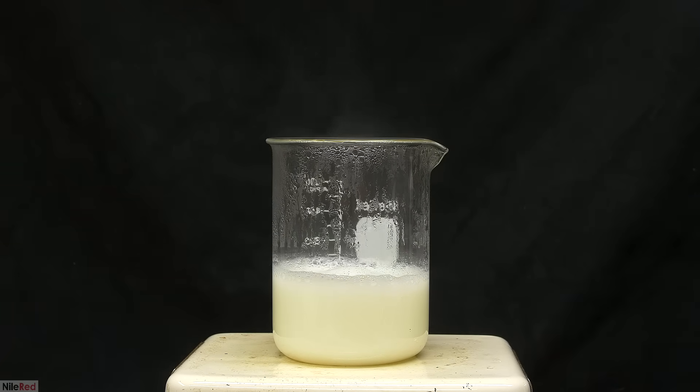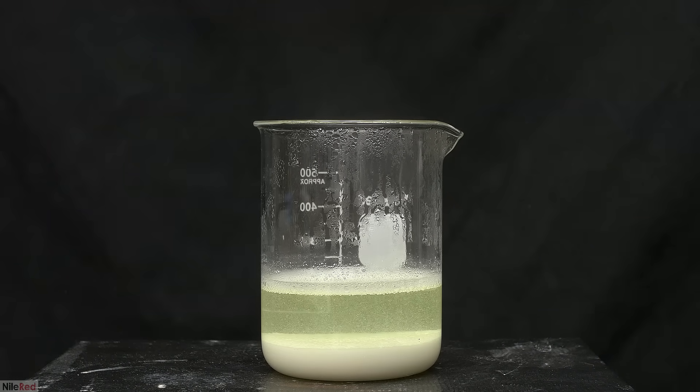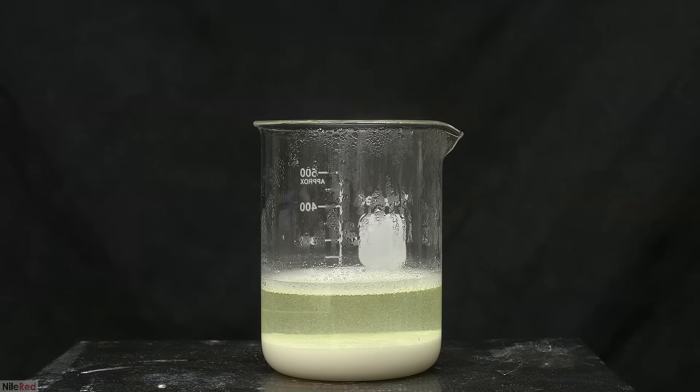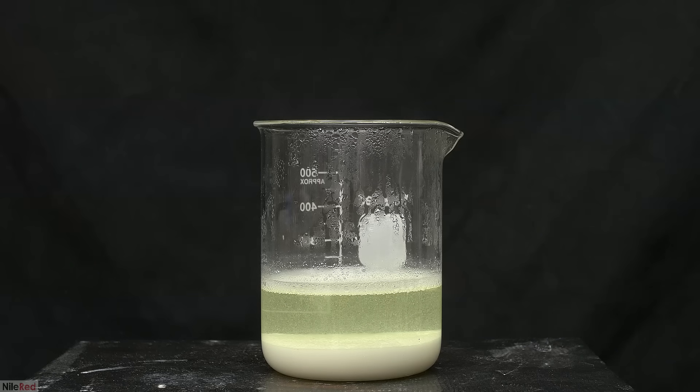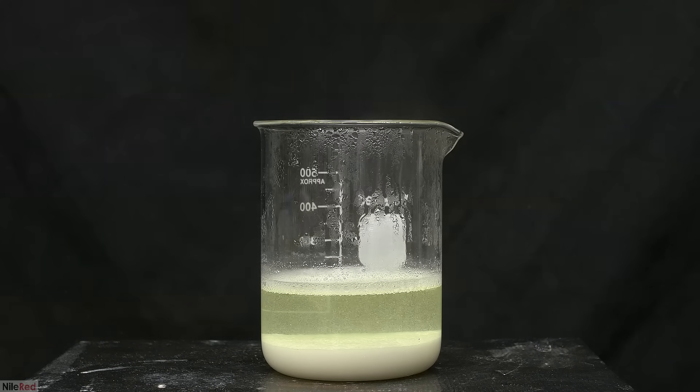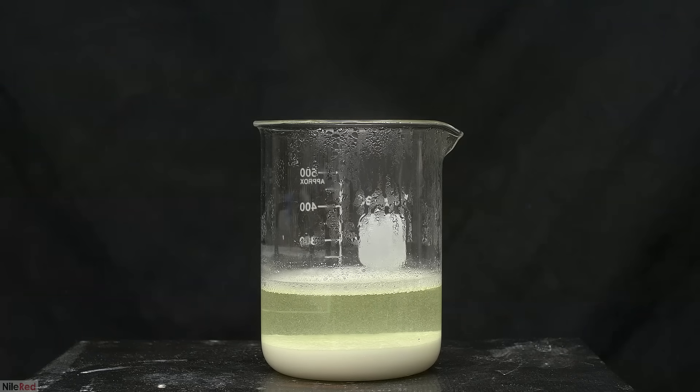After boiling it for 10 minutes, I take it off the hot plate. I let the beaker sit undisturbed for about 30 seconds, and things quickly settle at the bottom. The solid at the bottom is a mixture of unreacted calcium carbonate and precipitated proteins. Now that most of the solids have settled, I move on to filtering.